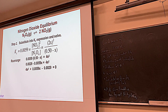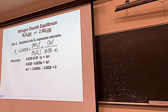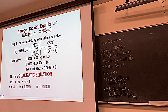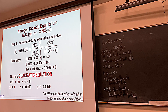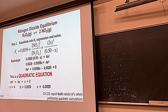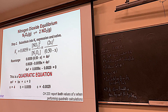To solve the quadratic, identify A (coefficient of x²), B (coefficient of x), and C (the constant). Please report both values when you do a quadratic — I want to see that you get them both, and that you know which one is correct to use. Plugging into the quadratic formula gives two roots: one positive and one negative.